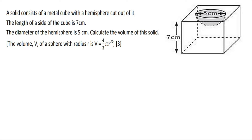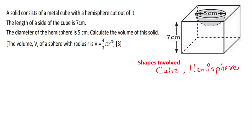To start with this question, the first thing you should look for is the shapes involved in the problem. You have a cube and a hemisphere. The second thing is to look for the data given and the units. You have the side of the cube which is seven centimeters and the diameter of the hemisphere which is five centimeters.